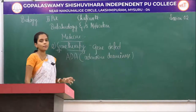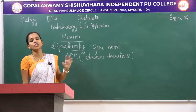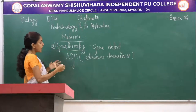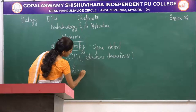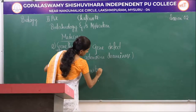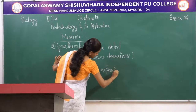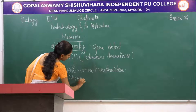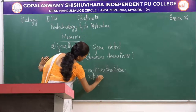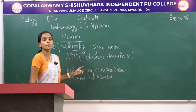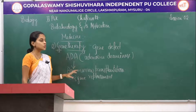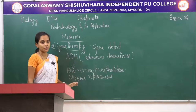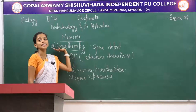In adenosine deaminase deficiency, the immune system fails to function properly. This ADA can also be treated by methods other than gene therapy, such as bone marrow transplantation and enzyme replacement therapy. However, these two methods are not fully successful because they do not completely cure ADA. To cure it completely, we can go for the gene therapy method.